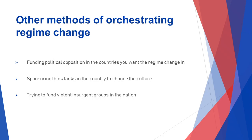Other methods of orchestrating regime change beyond sanctions and intervention include funding political parties in the country where you want regime change — something the US has been doing for a long time, picking opposition parties and ensuring they can put enough pressure on the existing government. Secondly, sponsoring think tanks to change the culture of thinking, as the US did in Soviet Russia to break down the Soviet Union. Another riskier method is funding violent groups in the nation to oppose political change — something the US tried in many countries, which backfired quite badly when they ended up funding terrorist groups.